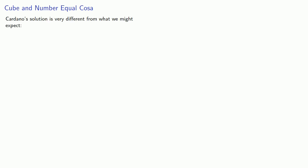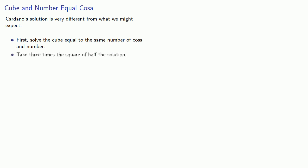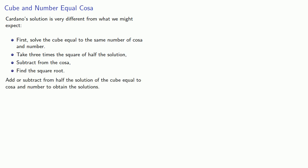While in modern mathematics we would see no problem handling all three cubic types with the same rules for cube and cosa equals number, Cardano breaks them into three different cases. For cube and number equals cosa, Cardano's solution proceeds as follows: first solve the cube equal to the same number of cosa and number — that is, solve a related equation. Then take three times the square of half that solution, subtract from the cosa, and find the square root. Finally, add or subtract from half the solution of the related equation to obtain the solutions.